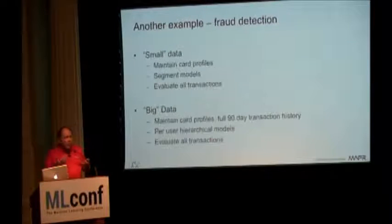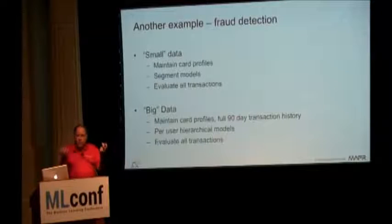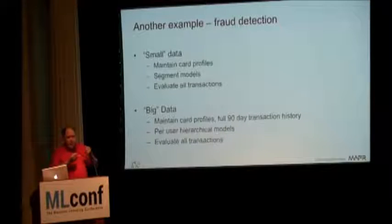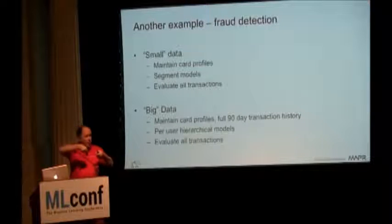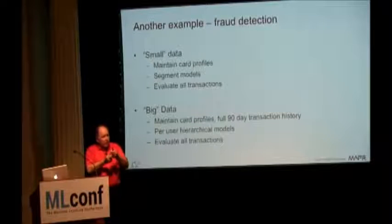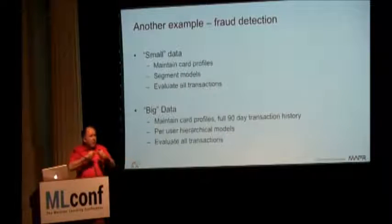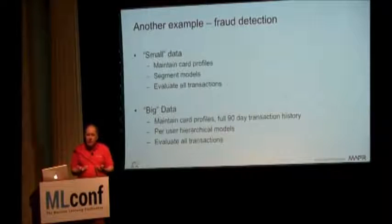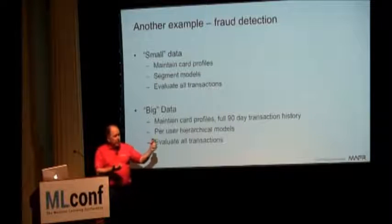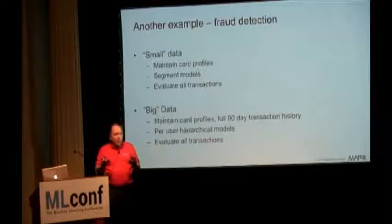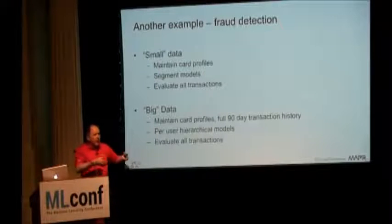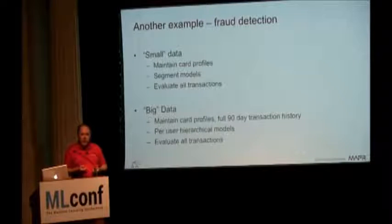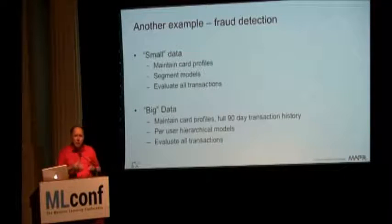Fraud detection has the same sort of thing. In the small data world, you capture a profile per person. You might create models per segment — if it's really advanced, you might have hundreds of these models. Then you'll evaluate every transaction against the profile and model appropriate for each person. This catches a lot of fraud. Fraudsters, however, adapt. Wherever you stop them, they start trying to work around it — more and more clever, more and more subtle. We've built this thing on the internet, which is a fraudster's paradise. They can now steal tens of millions of accounts and start doing very small transactions fraudulently — transactions you probably won't notice.